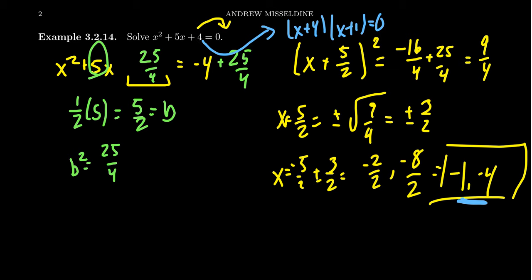This is something you're going to see in general: if you solve a quadratic equation by completing the square and you ended up with a perfect square when you took the square root, it turns out you didn't have to complete the square — you could have actually done it by factoring. But hindsight's always 20-20.